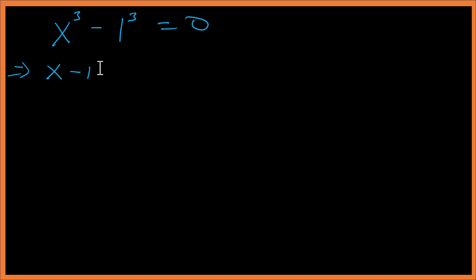This side becomes (x minus 1)(x² plus x·1 plus 1²) equals zero.